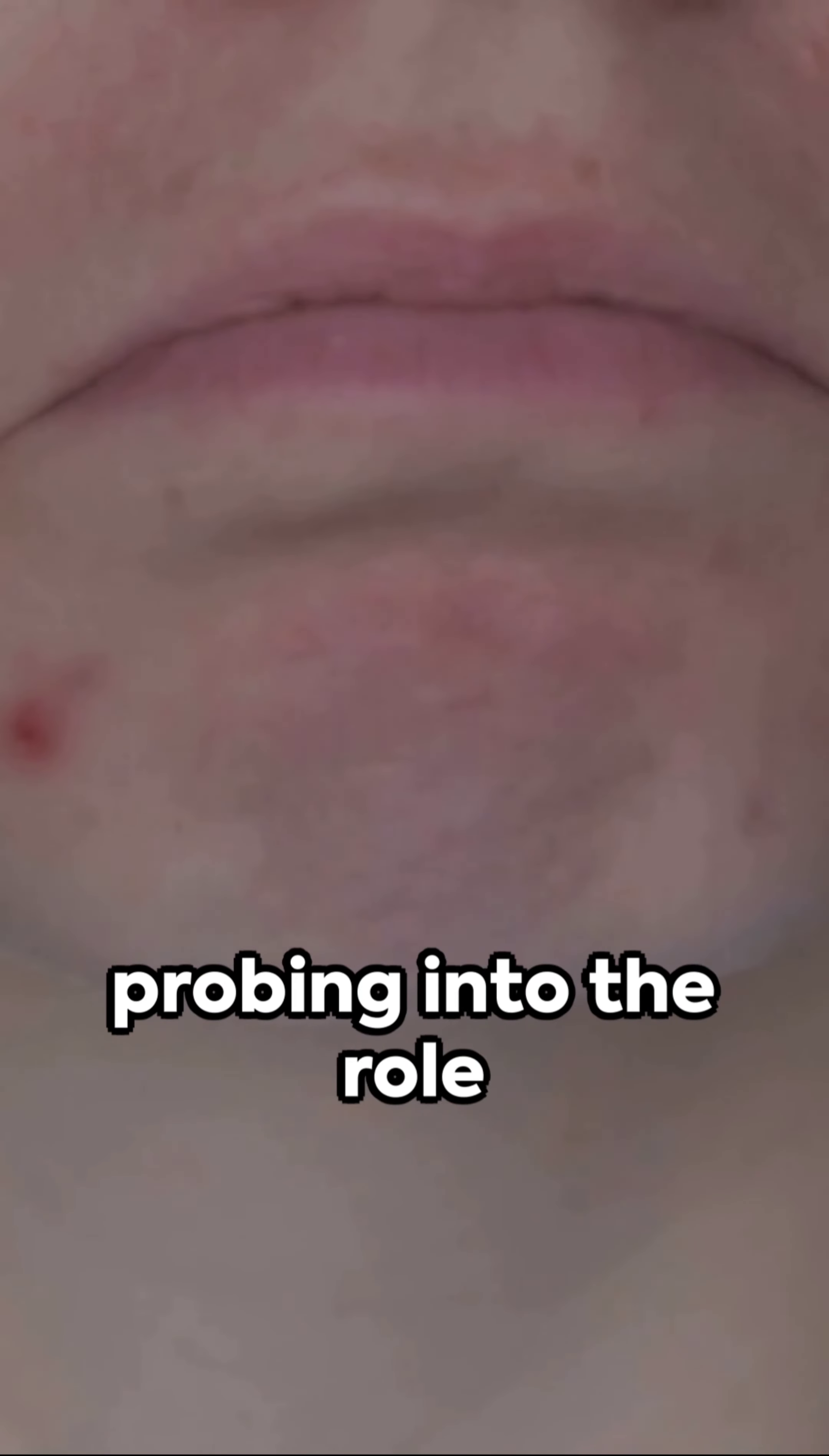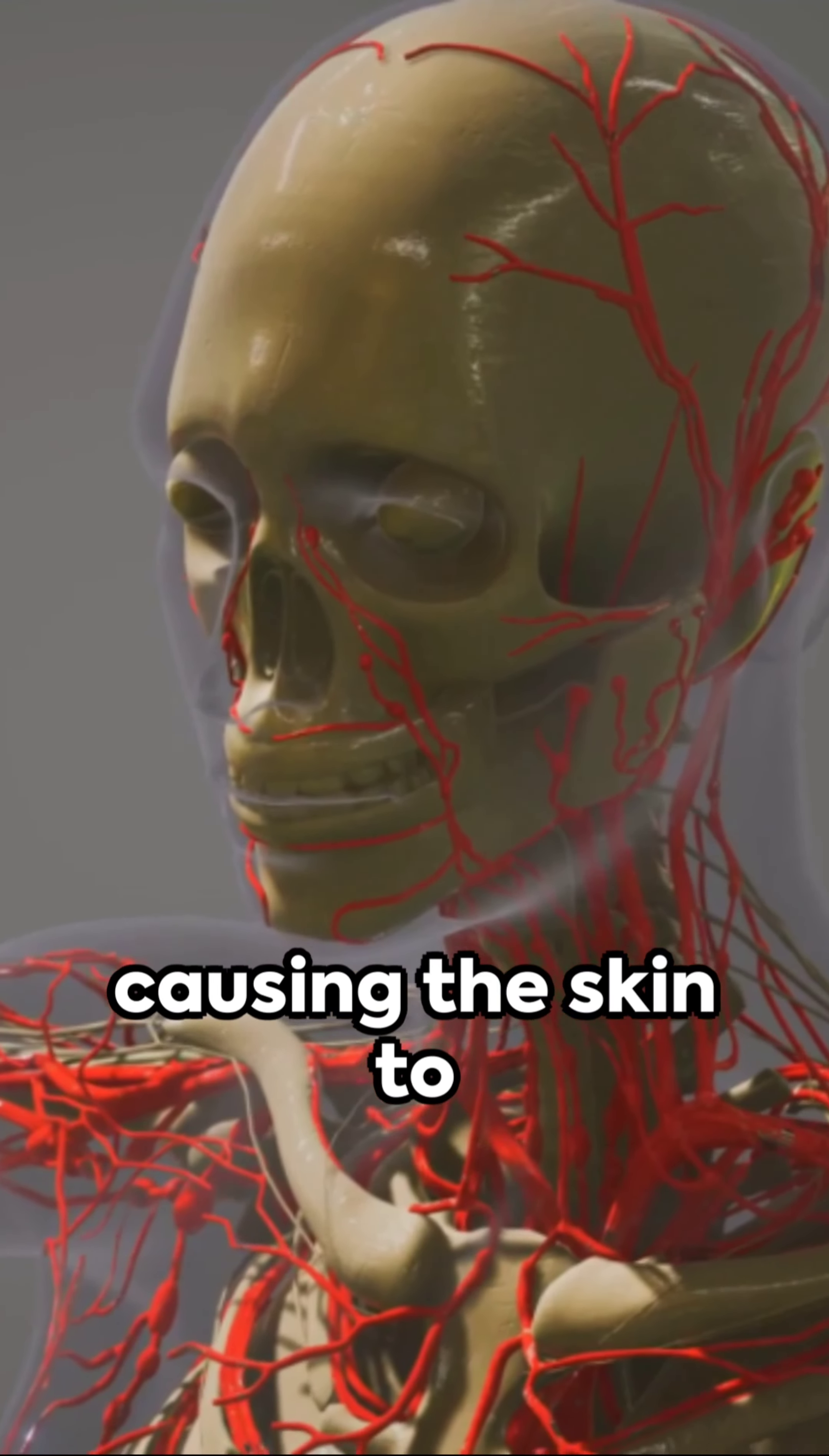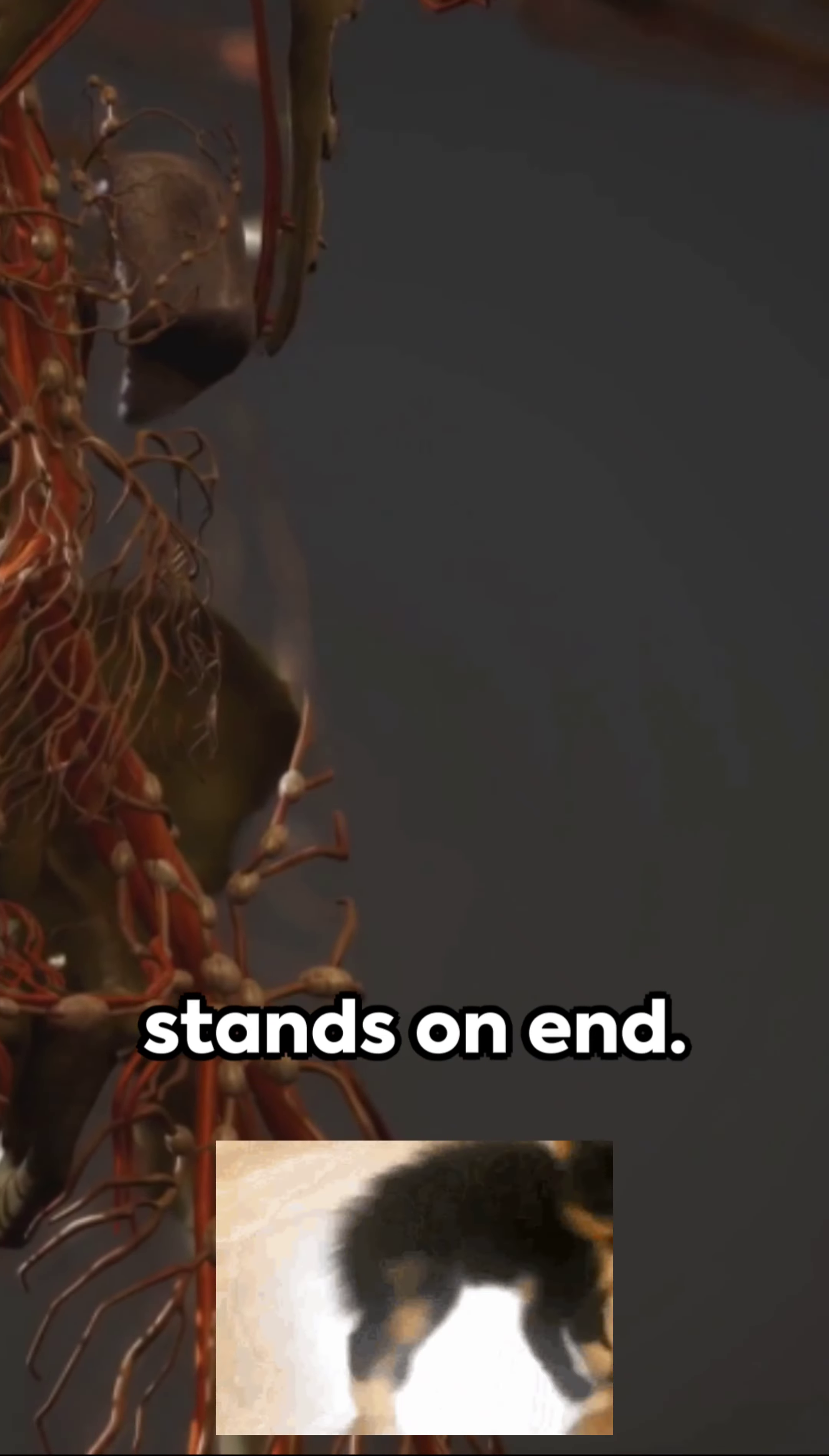New research is also probing into the role of digital vasoconstriction. Signals from our brain make blood vessels under the skin constrict, causing the skin to pucker and wrinkle. It's akin to a scared cat whose fur stands on end.